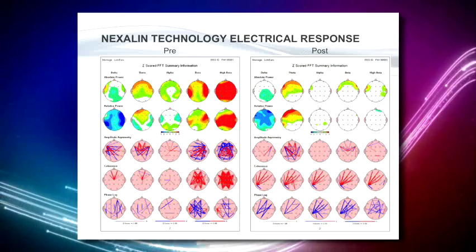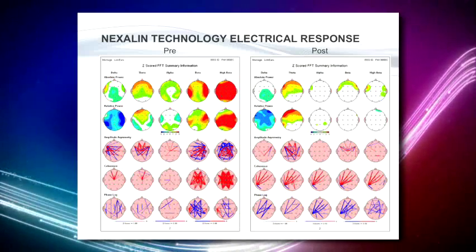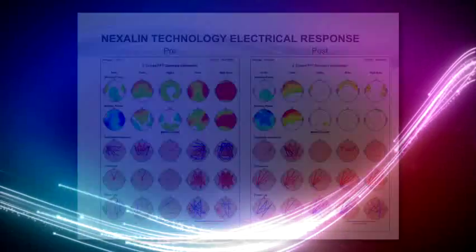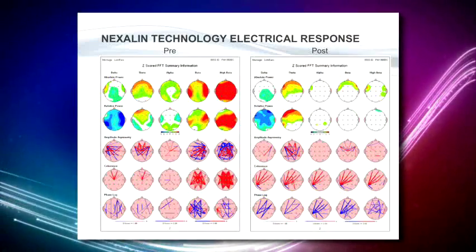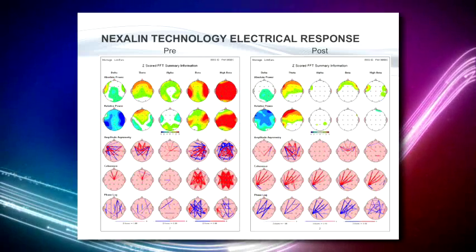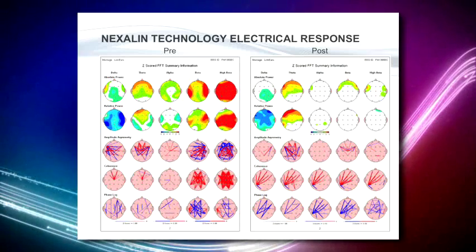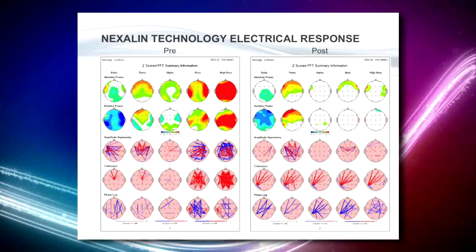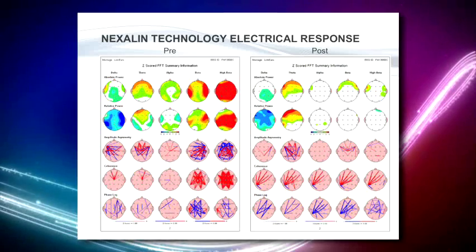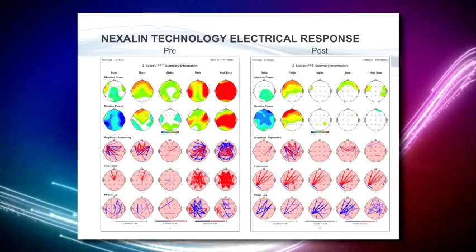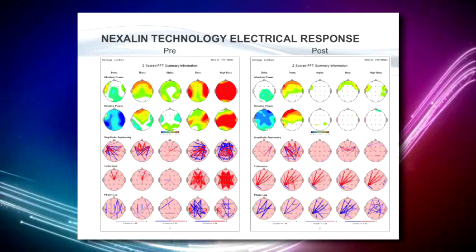The easiest way to look at a brain map and determine what it's telling us is how much color is there on it. You'll notice on the left map — the pre map — especially the top two rows, there is a lot of color. The green and blue demonstrate areas of the brain functioning too slowly. The red, yellow, and orange demonstrate areas that are moving too rapidly. So one is moving too rapidly, one is moving too slow — in other words, it's out of balance.